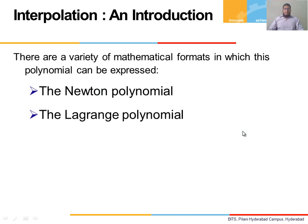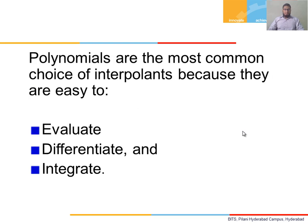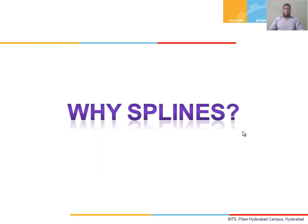We already know the merits and demerits of Newton's as well as Lagrange's polynomial. These are the polynomial systems that we have already learned. Polynomials are actually used because they are easy to differentiate, integrate, and evaluate. Then why go for splines?